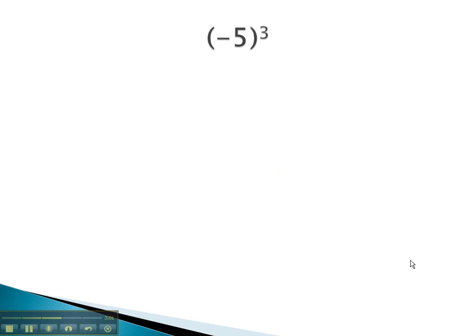How about this one? Negative 5 cubed. This time the exponent is odd. Odd exponent means we have an odd number of negatives, so our answer is negative. Negative what? Well we just have to do 5 cubed, or 5 times 5 times 5.